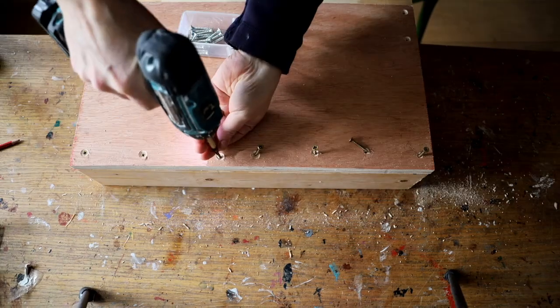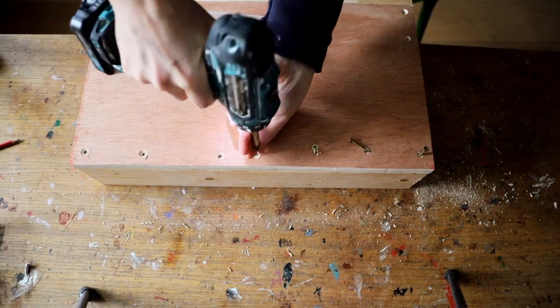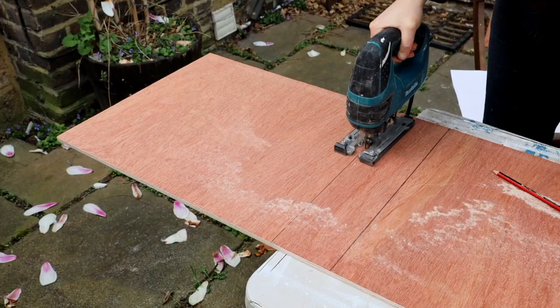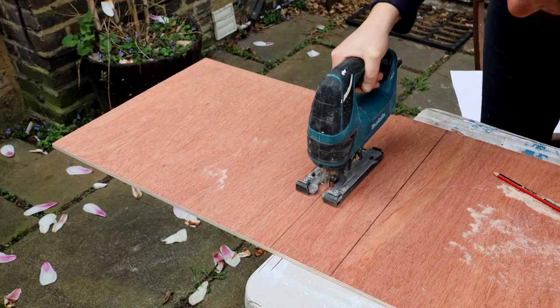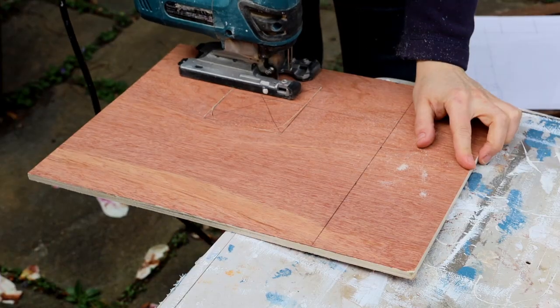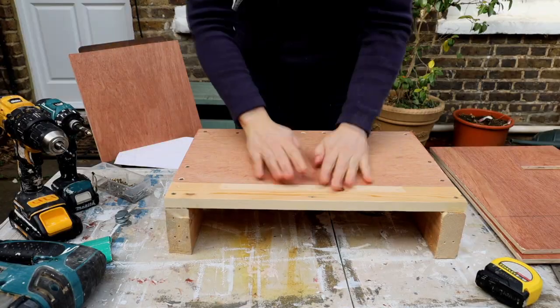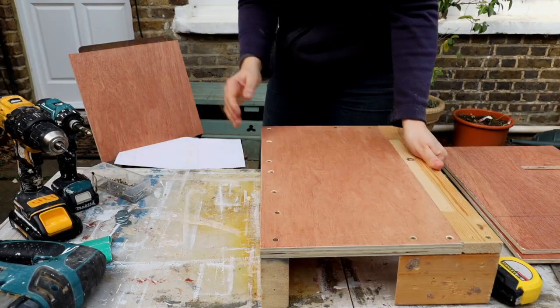And used a drill, then used a countersink drill bit to make sure the screws will sit flush, and then I screwed it together. For the walls I've used a 9mm plywood sheet that I've cut to size. I've cut out the window as well.